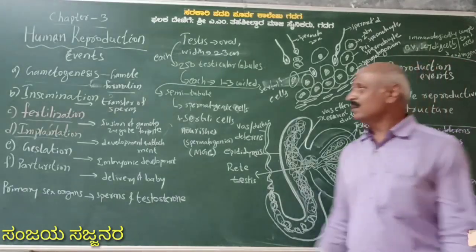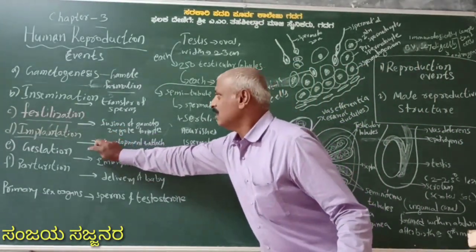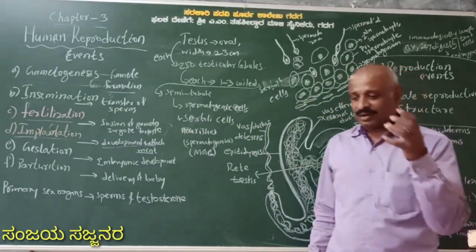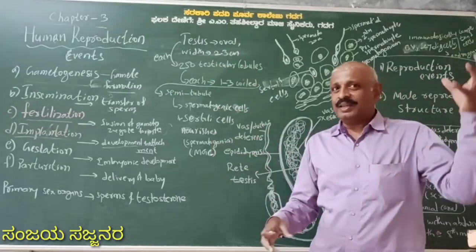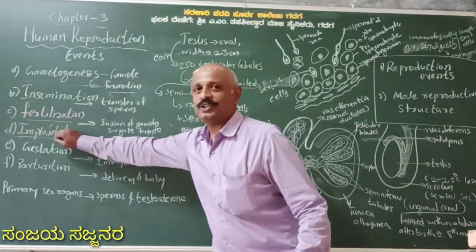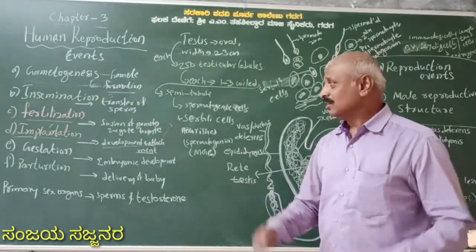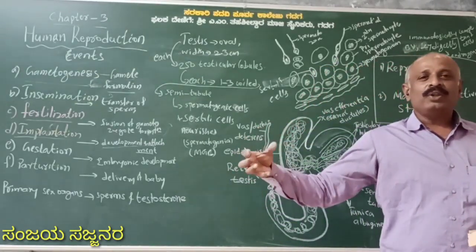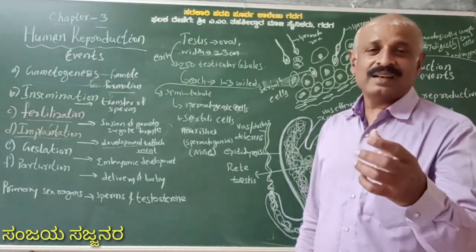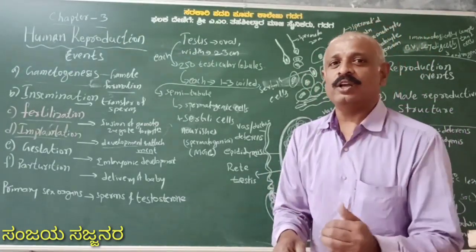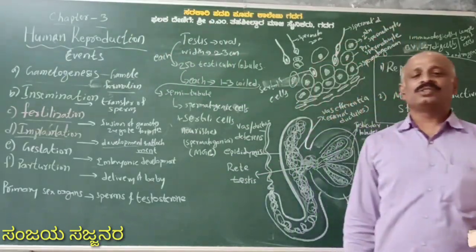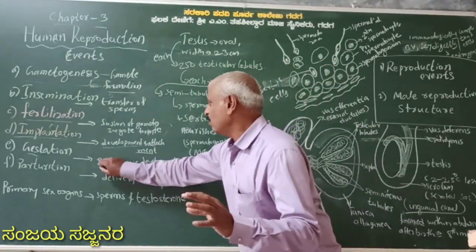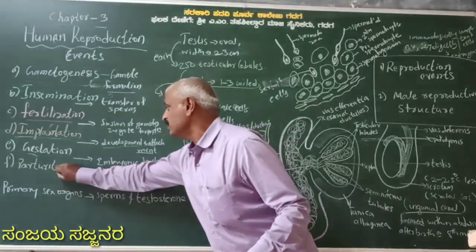What is implantation? Implantation is the development and attachment of the zygote embryo — active attachment to the uterus wall. That is called implantation. And after implantation of the embryo comes gestation — the total development of the embryo. In human beings, this is around 9 months — the period of pregnancy. After that comes parturition.